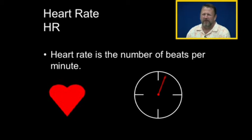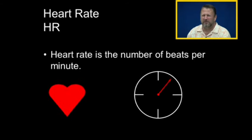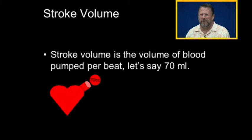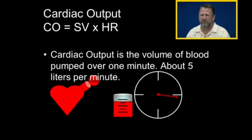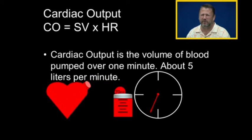Heart rate is simple enough — it's the number of beats per minute. Stroke volume is also simple to understand: each time the heart pumps, it pumps a certain volume of blood. In a normal 70-kilogram person, the stroke volume is 70 milliliters. Cardiac output is the volume of blood pumped over one minute, and it equals stroke volume times heart rate.